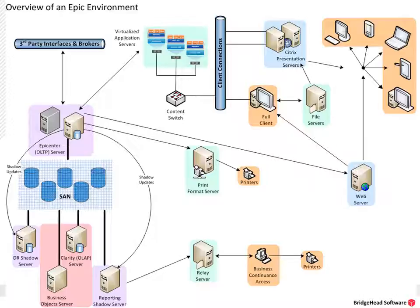The graphic here includes most of the major infrastructure components that you'll find in an Epic environment. The major components are the operational databases or the OLTP environment — these are in the lilac color — the analytical processing or OLAP environment in the pink color, the application processing servers highlighted in aqua, the presentation and connection servers in light blue, and lastly the client layer in the orange section.